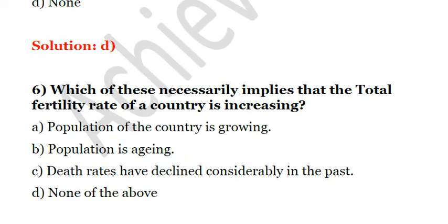The next question: which of these necessarily implies that the total fertility rate of a country is increasing? A. Population of the country is growing. B. Population is aging. C. Death rates have declined considerably in the past. D. None of the above. The answer is none of the above, because if population is growing, it is not necessarily due to an increase in fertility rate — immigration could also be taking place.